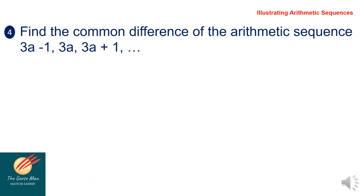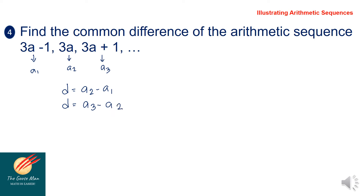Example 4: find the common difference of the arithmetic sequence 3a minus 1, 3a, and 3a plus 1. Here, a₁ equals 3a minus 1, a₂ equals 3a, and a₃ equals 3a plus 1. Remember that the common difference d equals a₂ minus a₁, or equivalently a₃ minus a₂.